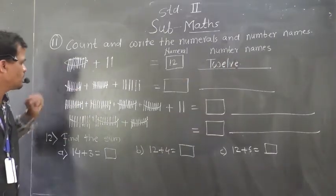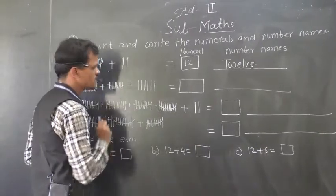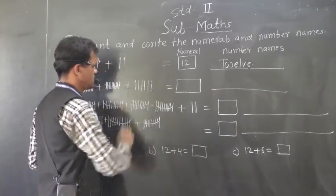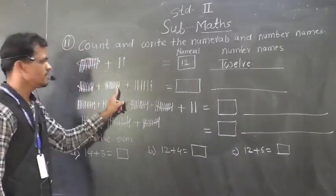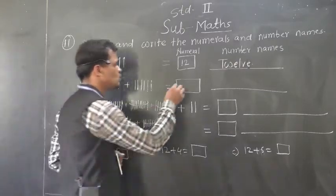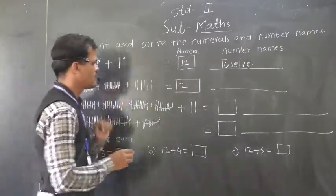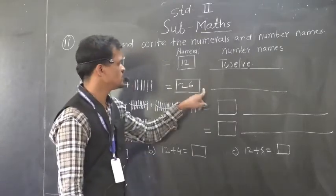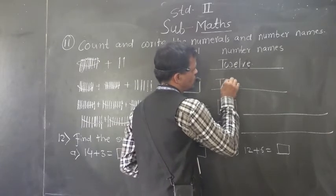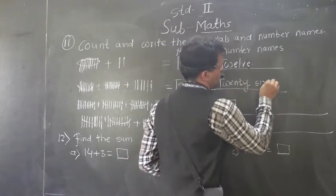So, 10 plus 10, 20. And how many single pencils are there? 1, 2, 3, 4, 5, 6. So, 20 plus 6, 26. 26 means 2 tens. See here, 2 tens and 6 ones. So, each number from here, 26. So, write the spelling of 26.